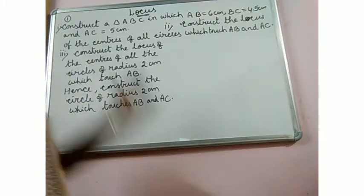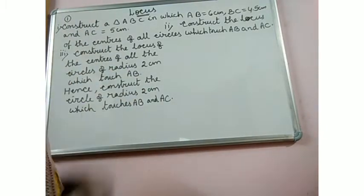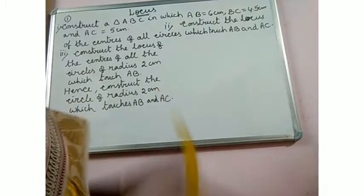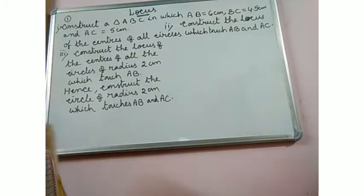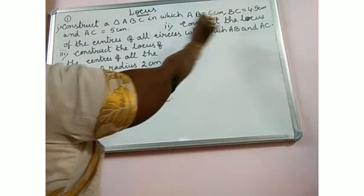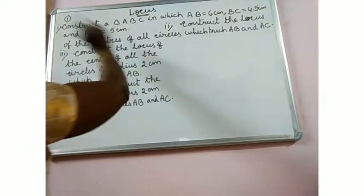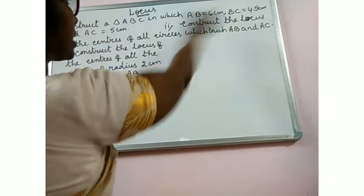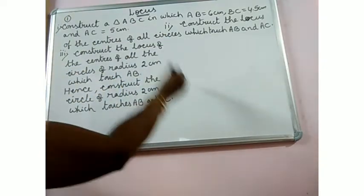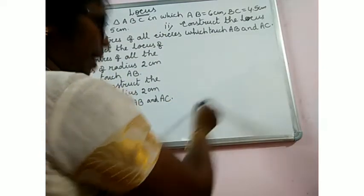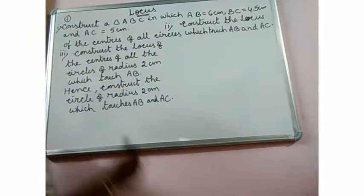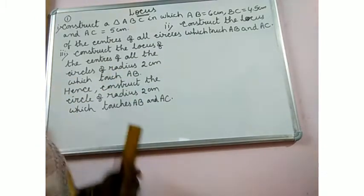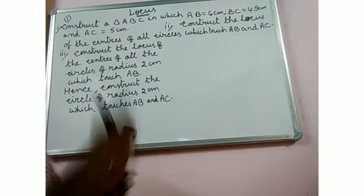If you read it all at once we may not be able to understand well. Let us do it part by part. First, triangle construction. We need to consider which side to take as the base so that it will be easy to construct the remaining things.